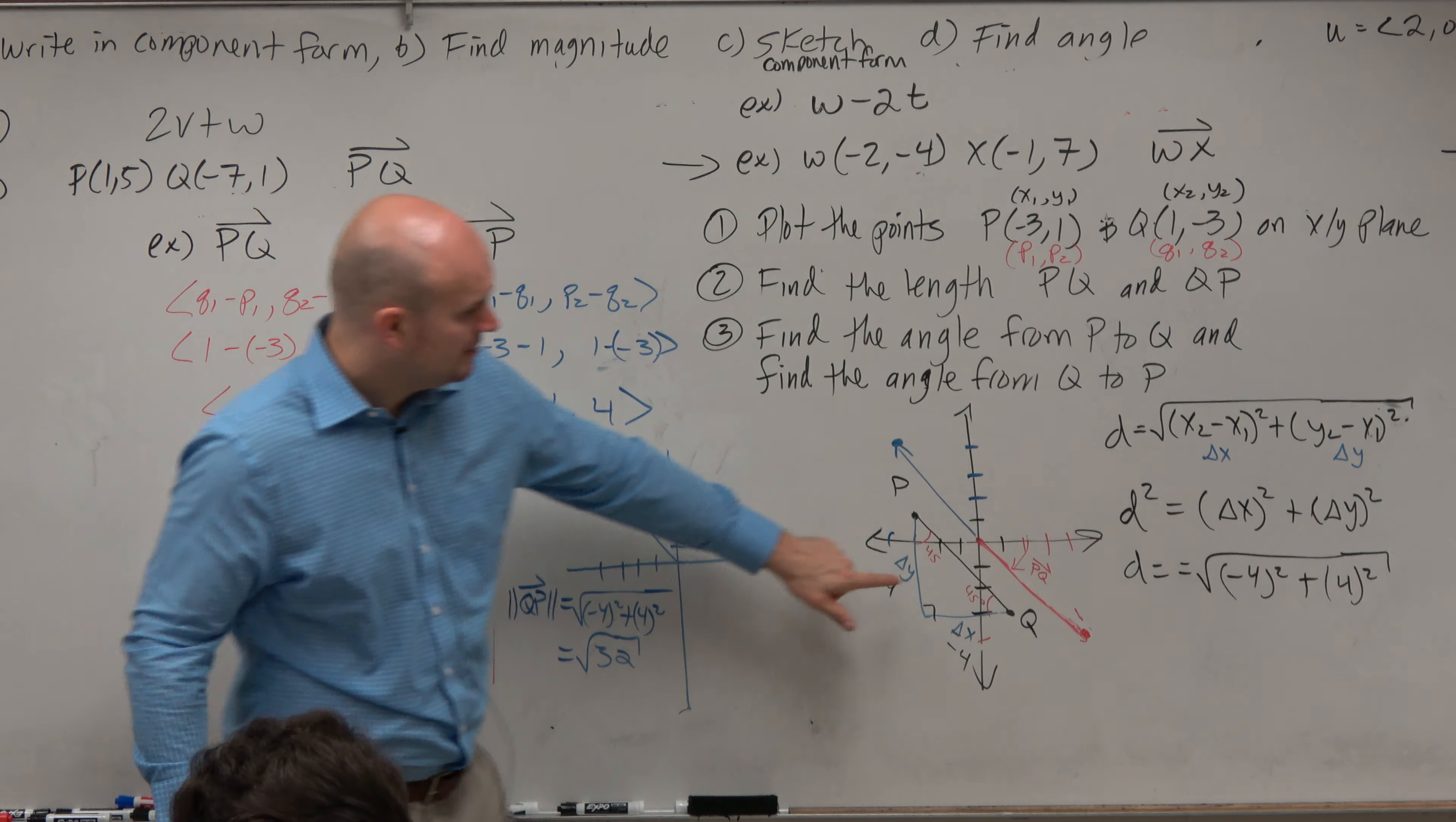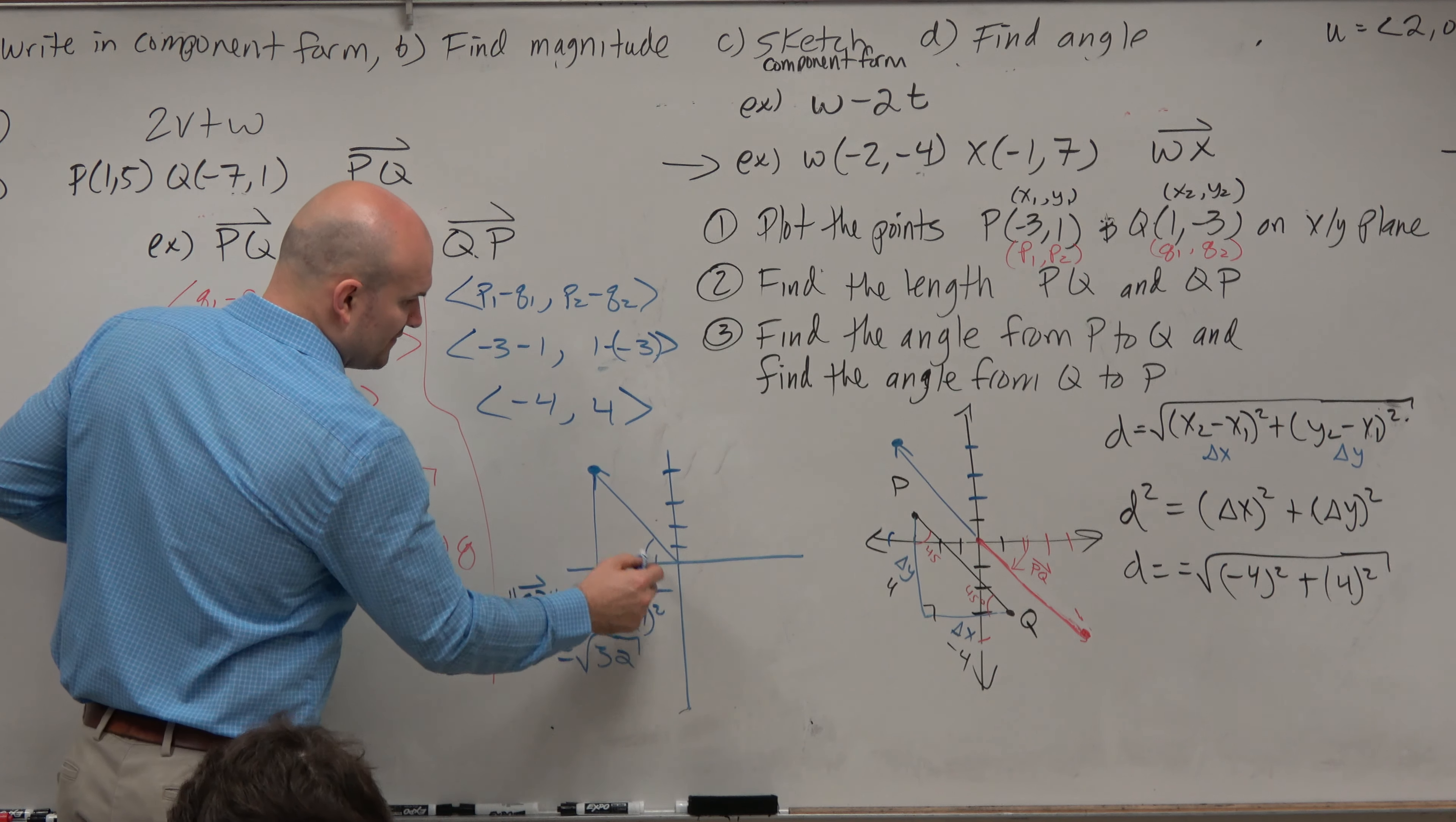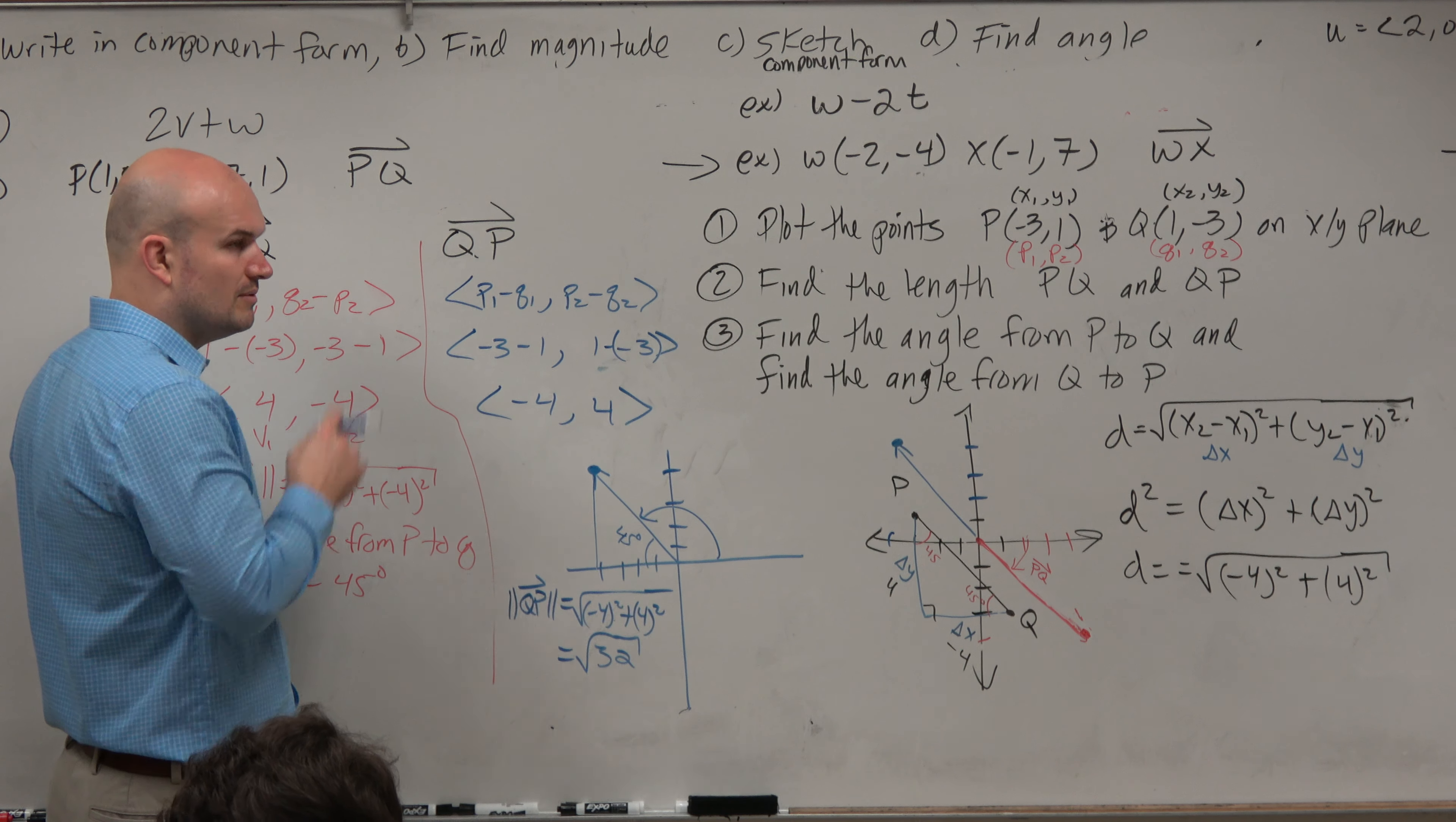Now, let's go and find the angle. What is the angle of this vector here? Well, we know inside this triangle, we already have 45 degrees, right? So we know from here to here is 45 degrees. But is that what we'd say the angle of the vector is, 45 degrees? No, because we need to talk about it from standard form, which is from here to there.